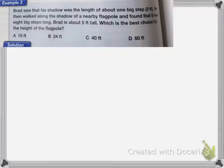We're going to do another one. Brad saw that his shadow was about the length of one big step 3 feet. He then walked along the shadow of a nearby flagpole and found that it was 8 big steps long. Brad is about 5 feet tall, which is the best choice for the height of the flagpole. So we can estimate the heights of objects by the lengths of their shadow. In this example, Brad, who is 5 feet tall, cast his shadow about 3 feet long.